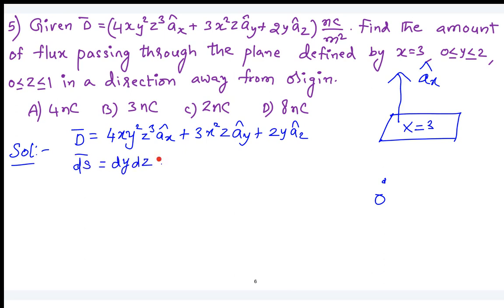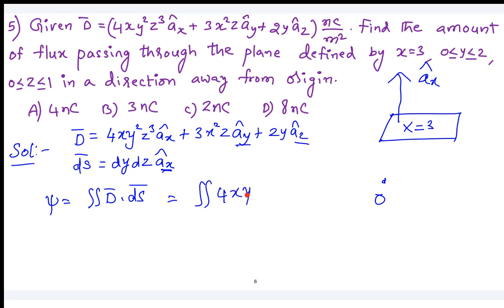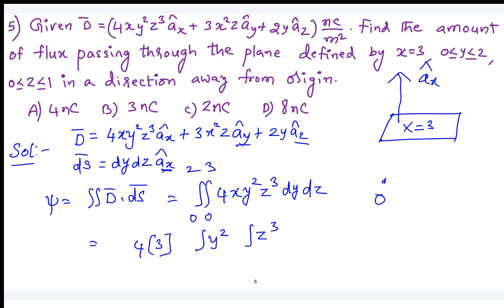So when you take the dot product, the total flux is the double integral of D dot dS. The second and third terms you need not consider because ay dot ax equals 0 and az dot ax equals 0. So you get the double integral of 4xy²z³ dy dz, where y lies from 0 to 2 and z lies from 0 to 3. Take x as the constant 3, so it's 4 times 3, then integrate y² and z³. Do it and share the answer.